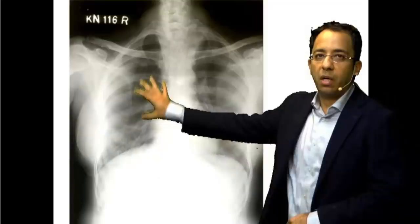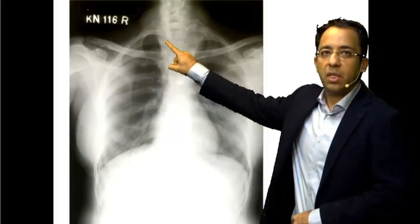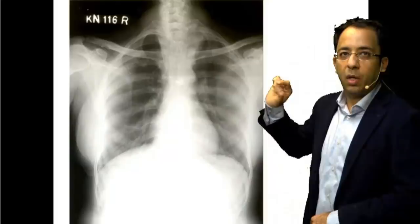Where is the finding in this chest X-ray? This is your cardiac silhouette, these are your lung fields. The finding is in the mediastinum — you can see there is widening of the mediastinum, and paravertebral shadows converging onto the spine on this frontal chest X-ray.